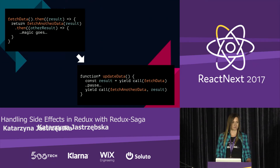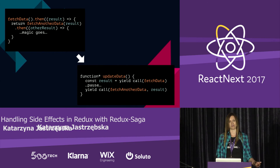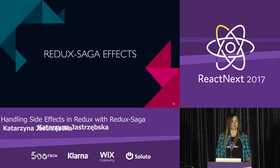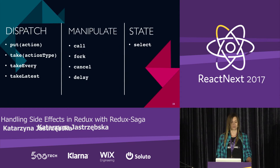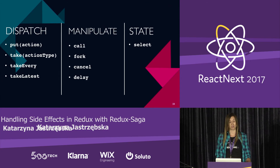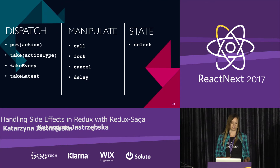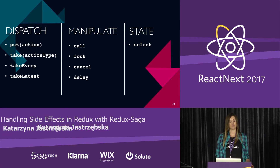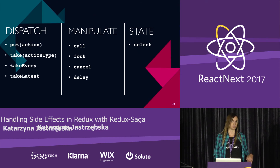This is how it looks with Redux Saga. But before we get to a real example, let's take a look at Redux Saga effects. Redux Saga comes with many useful effects, separated into sections. The first section covers effects related to dispatching actions: `put` — which dispatches an action to the reducer — and `take`, which listens to the dispatcher and reacts to a given action type.